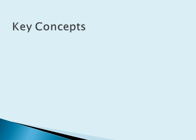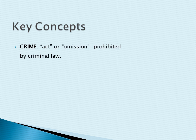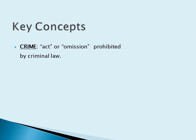First one is crime. Crime is an act or omission which is prohibited by criminal law. Here, act is a positive conduct — for example, theft, robbery, etc. Omission is the failure to act, and omission constitutes a crime when law imposes a duty to act and the defendant is in breach of that duty.